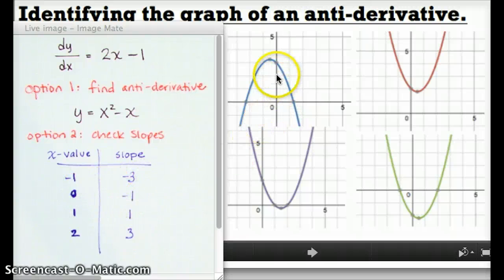For example, right here, at zero, if I go up, yeah, the graph does look like it has a negative one slope. When I look at this graph, it also looks like a negative slope. I'm not really sure if it's negative one. This looks pretty reasonable. So does that. So check the next one.